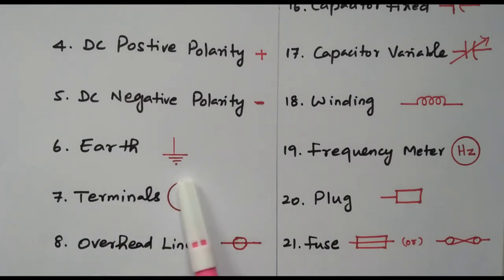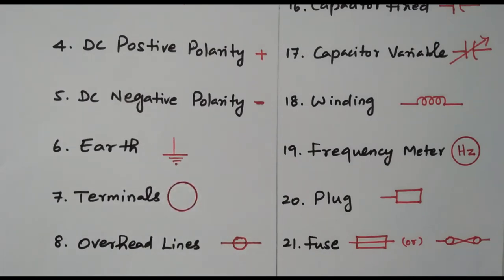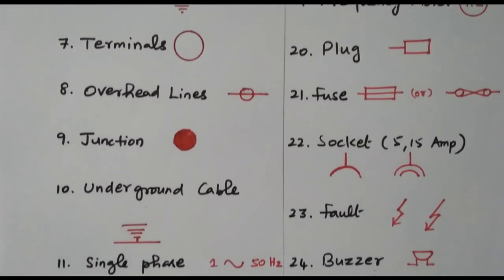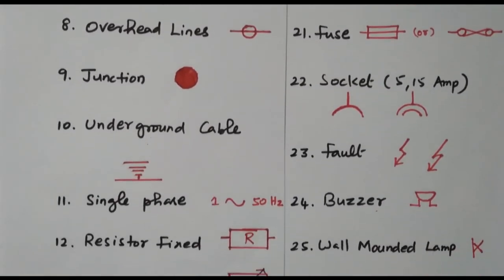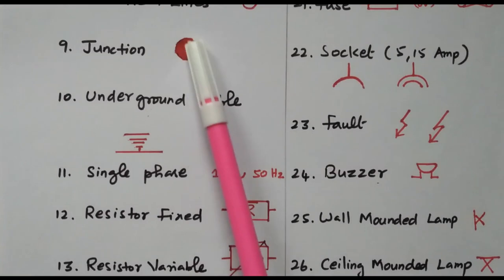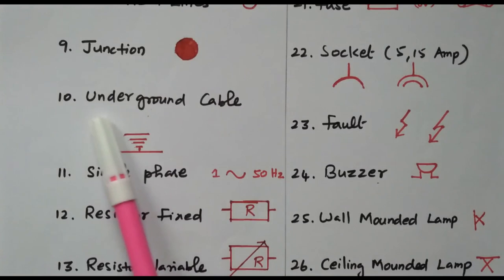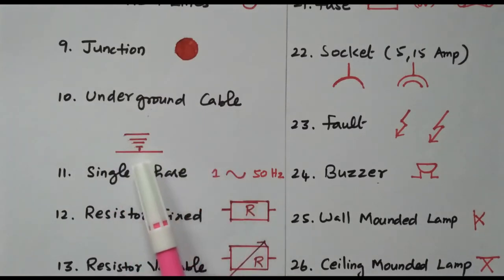The terminals are represented by a circle — any terminal, whether lamp or fan, everything is represented by a circle. The overhead line is represented by a circle over which one line is drawn. Then a junction, where two wires are crossed, is represented by a fully shaded circle. The underground cable is represented like an inverse of the earth ground symbol.